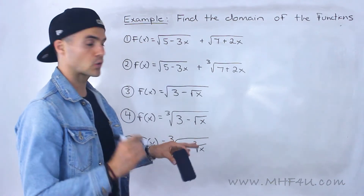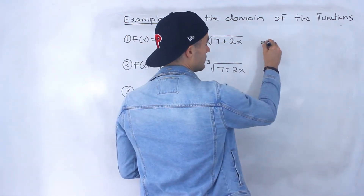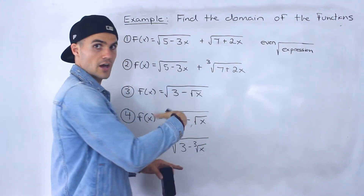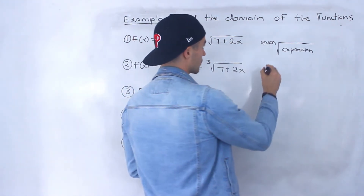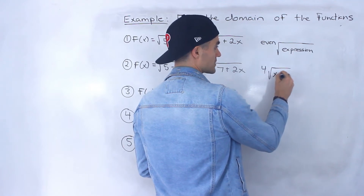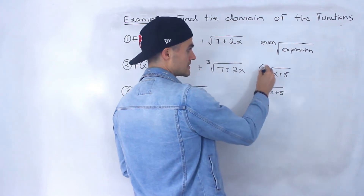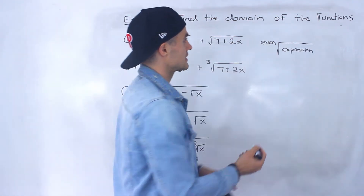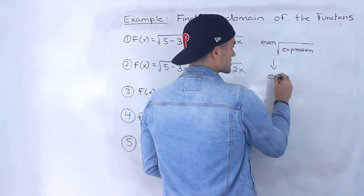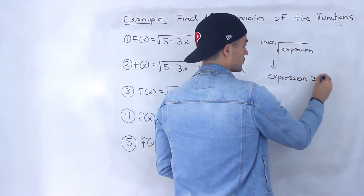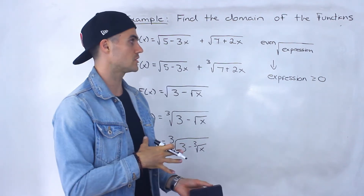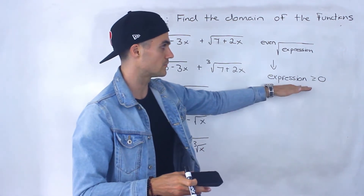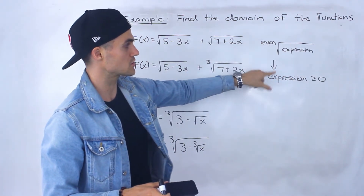Before getting into this I want to do a quick review. Whenever you have the even root of some kind of expression — for example the fourth root of x plus five, or the sixth root of x plus five, or the square root of x plus five — you have to make sure that expression is greater than or equal to zero, because you can't take the even root of a negative number. You can't take the fourth root of negative five or the square root of negative five. It always has to be zero or a positive number.